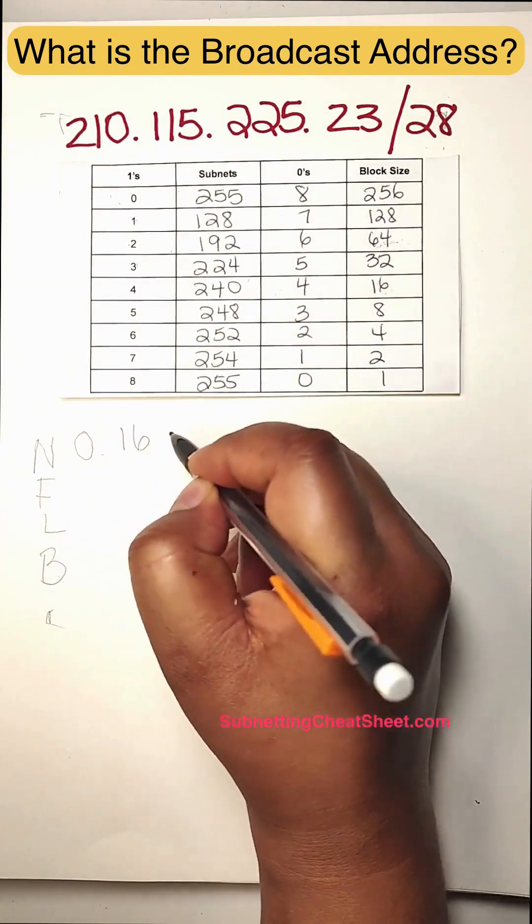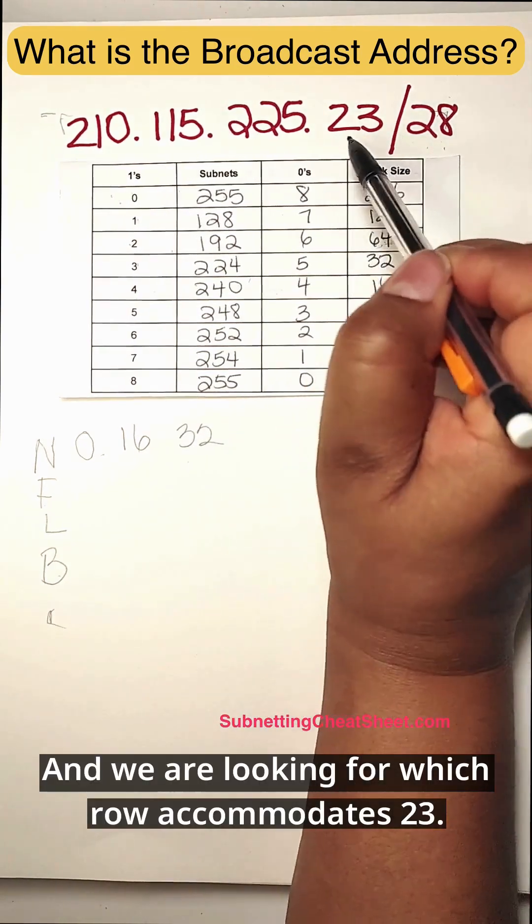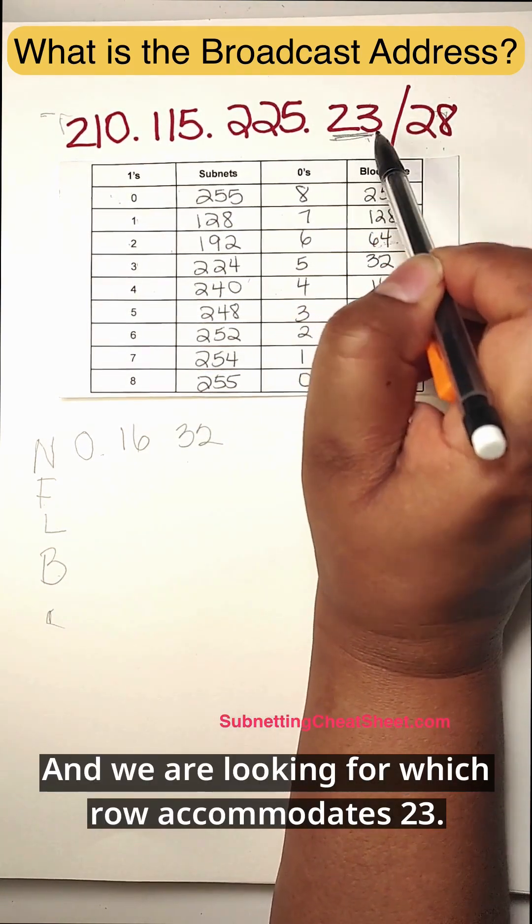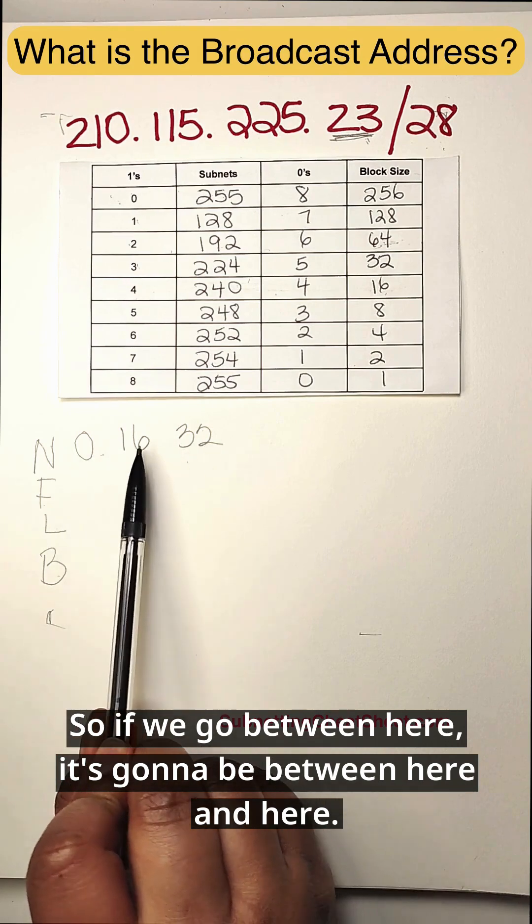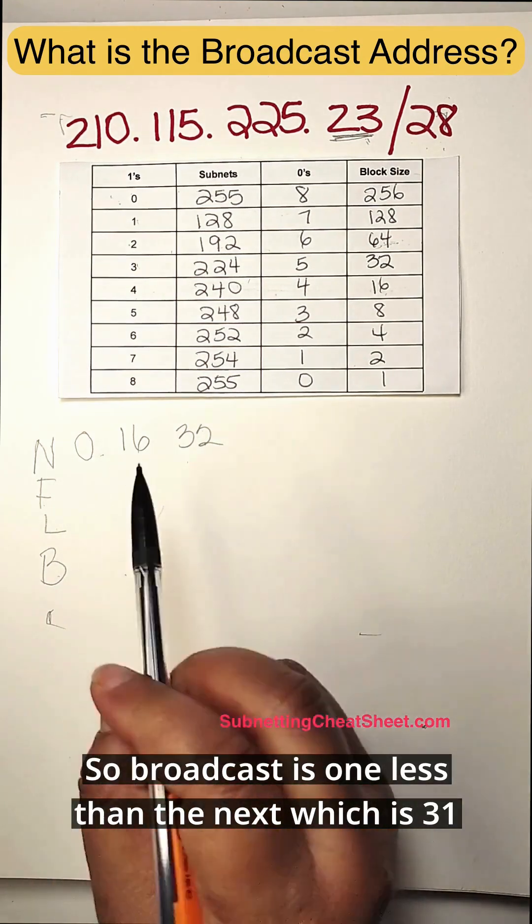Next one plus 16. Next one plus 16 is 32. And we are looking for which row accommodates 23. So if we go between here, it's going to be between here and here. So it's going to be this row. So broadcast is one less than the next, which is 31.